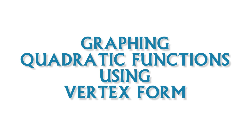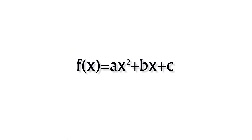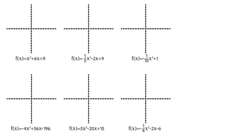Hello, this is Ray Dempsey and I'm here to talk to you about graphing quadratic functions using vertex form. Quadratic functions have the form f(x) = ax² + bx + c, where a, b, and c are real numbers and a is non-zero. The graphs of functions of this form are always parabolas. Let's look at a few examples.